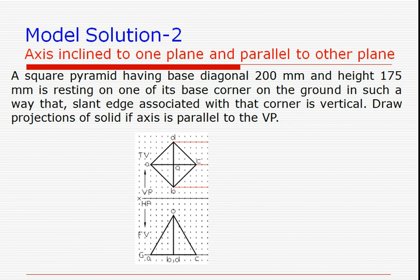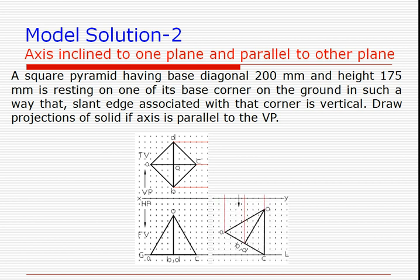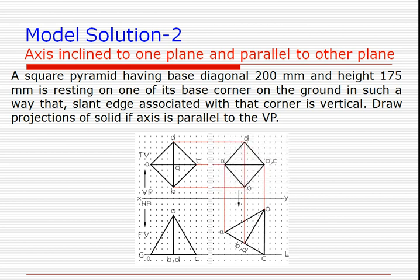The slant edge associated with the base corner — either OA or OC — is inclined so that it becomes vertical. The slant edge containing the resting corner is now in a vertical position; that is the required inclination. Finally, we obtain the top view of the solid by drawing horizontals from the previous top view and verticals from the new front view, completing the solid.